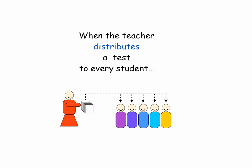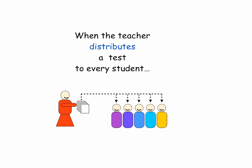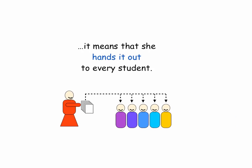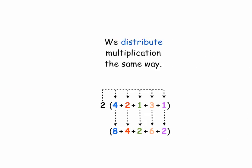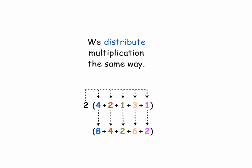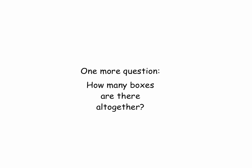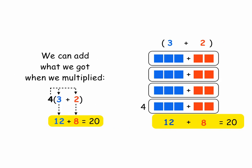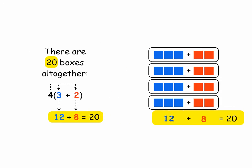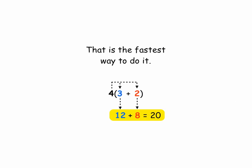When the teacher distributes a test to every student, it means she hands it out to every student — every student gets one. We distribute multiplication the same way. One more question: how many boxes are there altogether? We can add what we got when we multiplied. Twelve plus eight equals twenty. There are twenty boxes altogether. Four times three is twelve, four times two is eight, twelve plus eight equals twenty. That is the fastest way to do it — using the Distributive Property: four times three and four times two.